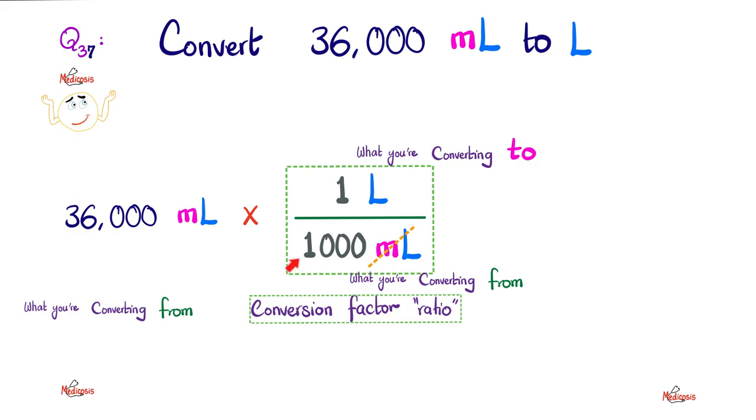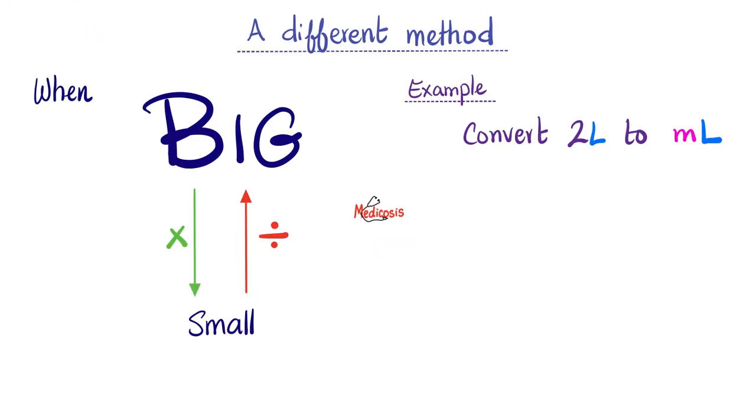Here is the conversion factor again. What you're converting from, downstairs. The unit that you're converting to, upstairs. Why? Because I want to cancel this with this.